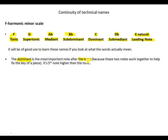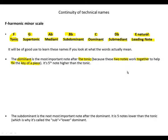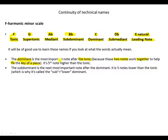The reason the dominant is the most important note after the tonic is because these two notes work together to help fix the key of a piece. It's five notes higher than the tonic. The subdominant is the next most important note after the dominant.